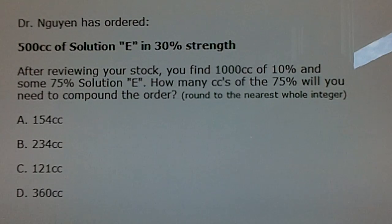It's the one on the screen. Dr. Nguyen has ordered 500 cc of solution E in 30% strength. After reviewing your stock, you find 1,000 cc of 10% and some 75% solution E. How many cc's of the 75% will you need to compound the order, round to the nearest whole integer?